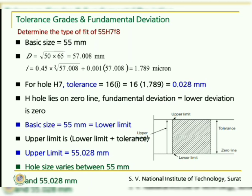Let us understand these concepts with an illustration to determine the type of fit of 55H7F8. Here, 55 indicates the basic size is 55 mm. The diametral steps are 50 and 65, and values of D and i are calculated using the equations. For hole H7, which is a basic hole, the tolerance IT7 is given by 16i, so the value of tolerance comes out to be 0.028 mm.